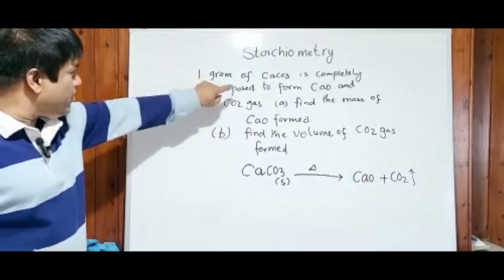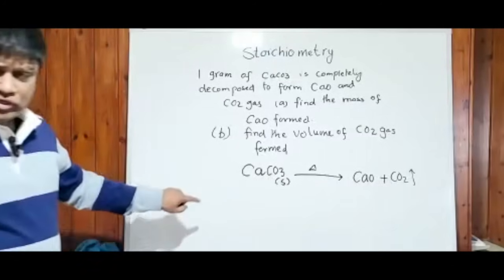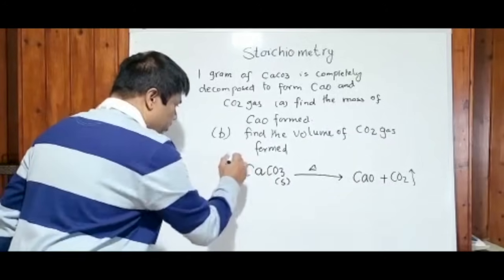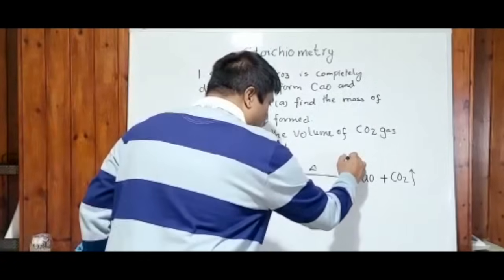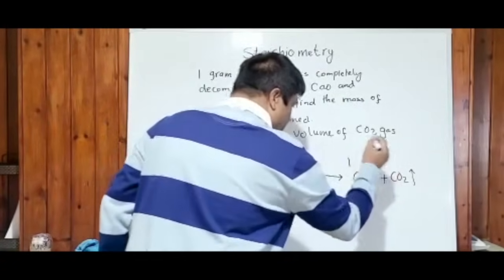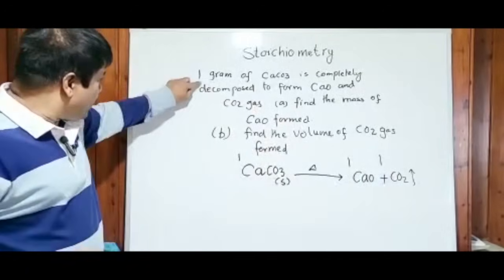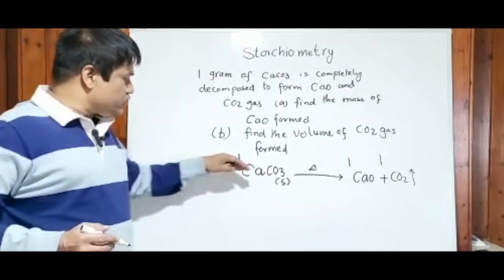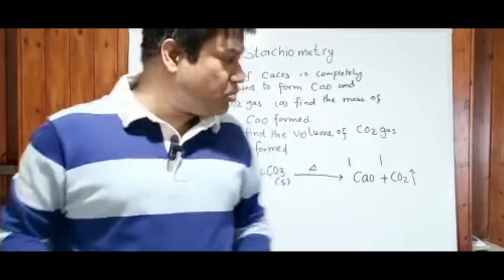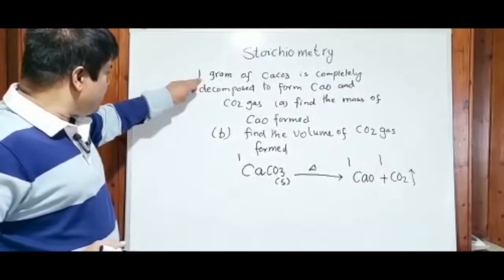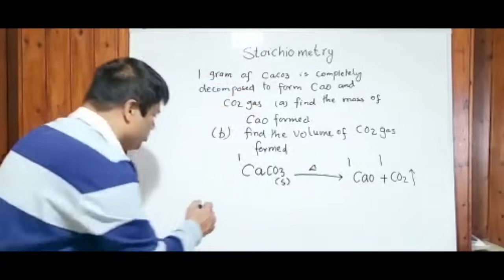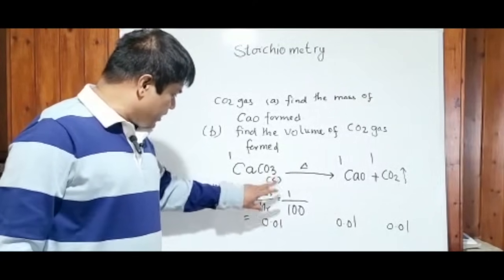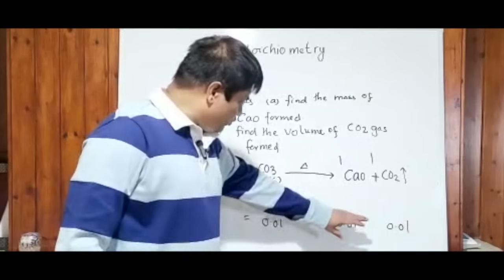One gram of calcium carbonate is given. When you look at the balanced equation, the theoretical ratio is: one mole of reactant forms one mole of calcium oxide and one mole of carbon dioxide. Now we have to work out the actual ratio using this mass. As I taught in my previous video, we work out the moles: 1g of CaCO3 gives 0.01 moles. So we will get 0.01 moles of calcium oxide and 0.01 moles of carbon dioxide.